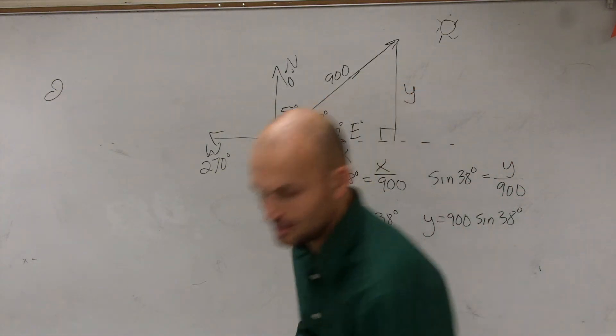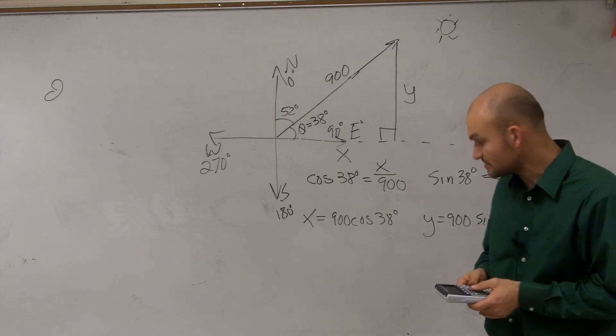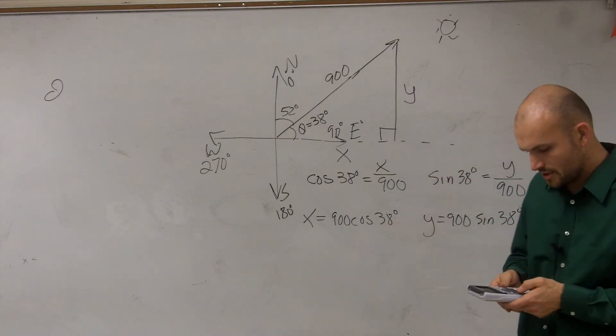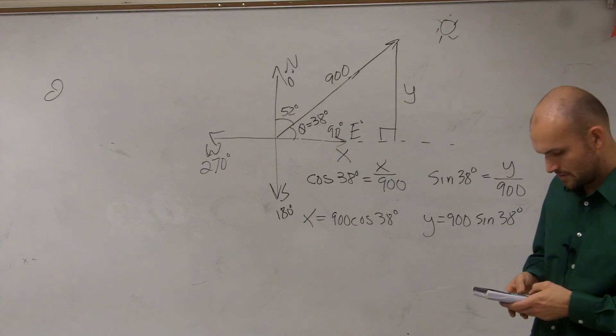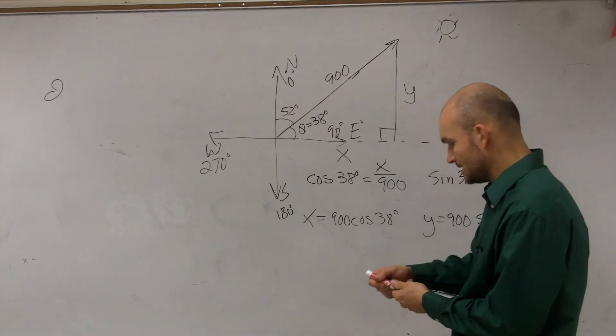Then we take our calculators and we just go and evaluate for each one of these terms, making sure that we're in degree mode. So I'd say cosine of 38 times 900 and I get approximately 709